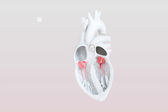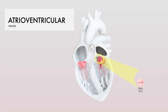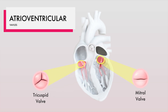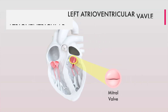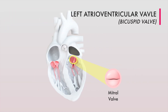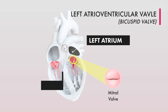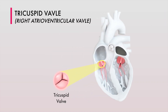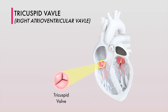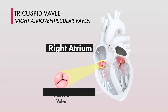Looking at the valves in more detail, the two atrioventricular valves are the mitral and tricuspid valves. The mitral valve, also known as the left atrioventricular valve or bicuspid valve, has two leaflets and lies at the inlet between the left atrium and ventricle. The tricuspid valve, also known as the right atrioventricular valve, has three leaflets and lies at the inlet between the right atrium and ventricle.